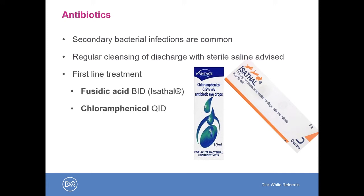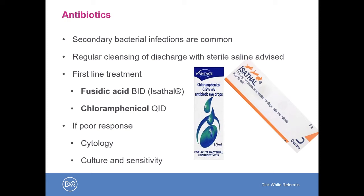First-line treatments include fusidic acid, which can be used twice daily, or chloramphenicol four times daily. We use these first-line because we want a bacteriostatic effect, and also because of our knowledge that the normal ocular surface commensal flora is predominantly gram-positive — and both these agents have good gram-positive efficacy. If there is a poor response to treatment, a very severe infection, or a complicated melting corneal ulcer, cytology, culture, and sensitivity should be performed for evidence-based antibiotic selection.